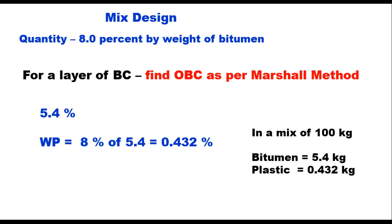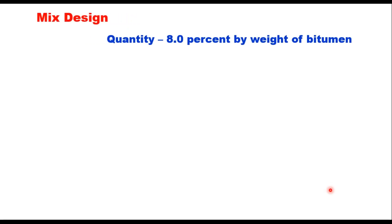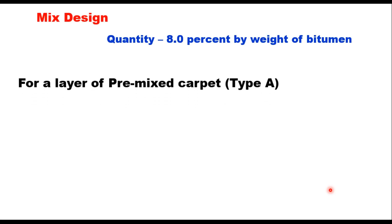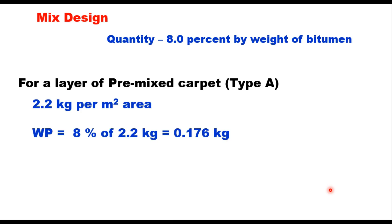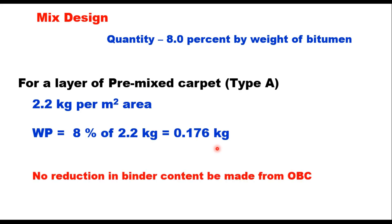In the case of thin wearing courses, the quantity of waste plastic remains the same — 8 percent by weight of bitumen. These mixes are generally of recipe type. For example, for pre-mixed carpet of Type A, MORTH specification suggests that the quantity of bitumen will be 2.2 kg per square metre, and therefore waste plastic will be 8 percent of 2.2 kg, which is 0.176 kg. The IRC code states that no reduction in binder content shall be made from the OBC after adding waste plastic.